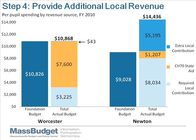Step 4: provide additional local revenue where possible. Technically speaking, the Chapter 70 formula is just Steps 1 through 3, but we include Step 4 here to emphasize the fact that local communities have the option of contributing additional revenue on top of their required amount, and many wealthy communities do choose to do this. For this reason, it's important to think of the Chapter 70 formula as providing a baseline education across the state, but it does not ensure equitable total funding across the state. It's also important to notice that both Worcester and Newton's total actual budgets are equal to or greater than their foundation budget, except Worcester's is essentially equal to its foundation budget, whereas Newton's is 60% greater.